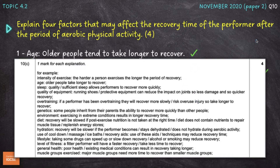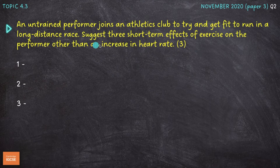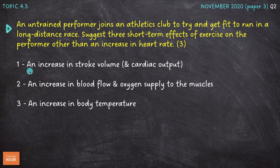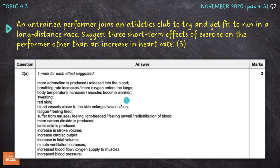Next question on topic 4.3: an untrained performer joins an athletics club to get fit for a long-distance race. Suggest three short-term effects of exercise other than an increase in heart rate — this time we don't need to explain them, so it's easier, for three marks. I've gone for: an increase in stroke volume and cardiac output, an increase in blood flow and oxygen supply to the muscles, and an increase in body temperature. The link in the description to the topic 4.3 video covers all short-term effects in more detail.